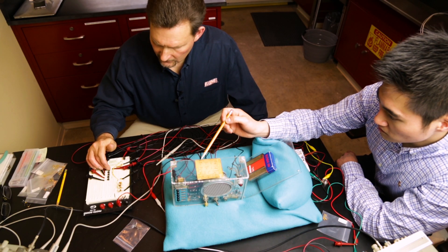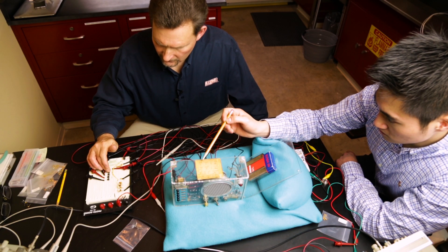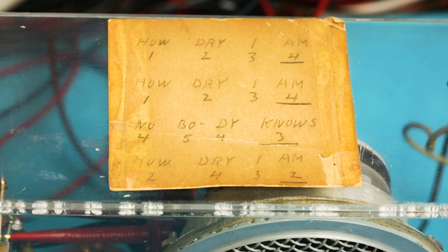So Bardeen would play the tune, How Dry I Am, when he demonstrated the box. There's actually a cheat sheet on the top of the box, so I'm going to follow that exactly.